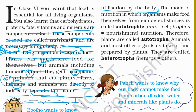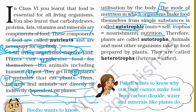There are two types of nutrition. One is autotrophic mode and the other is heterotrophic mode. The mode of nutrition in which organisms make food themselves from simpler substances is called autotrophic nutrition. Organisms that make their own food are called autotrophs.